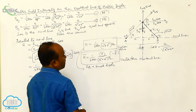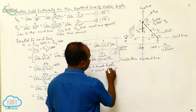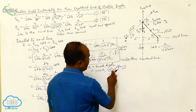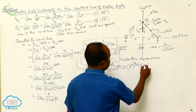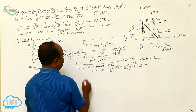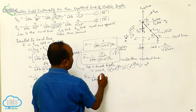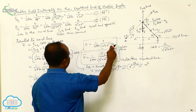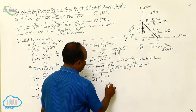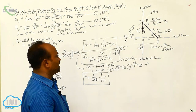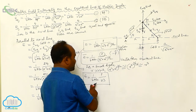For a small dipole, where r is much greater than a, r square plus a square whole to the power of 3 by 2 is nearly equal to r cube, since a is neglected. Therefore, the electric field intensity on the perpendicular bisector, that is the equatorial line, equals 1 by 4 pi epsilon naught times p by r cube.